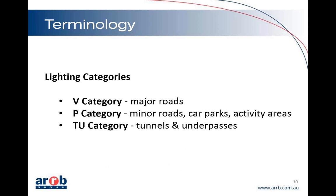Lighting categories. That's another one that often comes up. You have a number of lighting categories within the Australian standards. There's the V category, which is the major roads and freeways and arterial roads. There are P category standards, which are for minor roads, car parks, activity areas, underpasses, stairways, that type of thing. More recently there's now a TU series of categories, and that's for tunnels and underpasses.